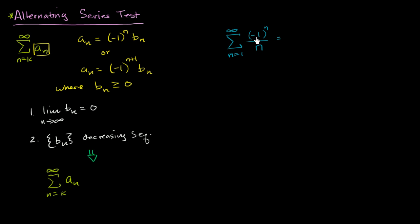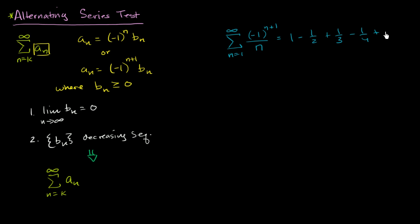We can write it out to make the series more concrete. Let's make this negative one to the n plus one. So when n is equal to one, this is going to be negative one squared over one, which is one. When n is two, it's negative one to the third power, which is negative one half. So it's one minus one half plus one third minus one fourth, and it just keeps going on and on forever.